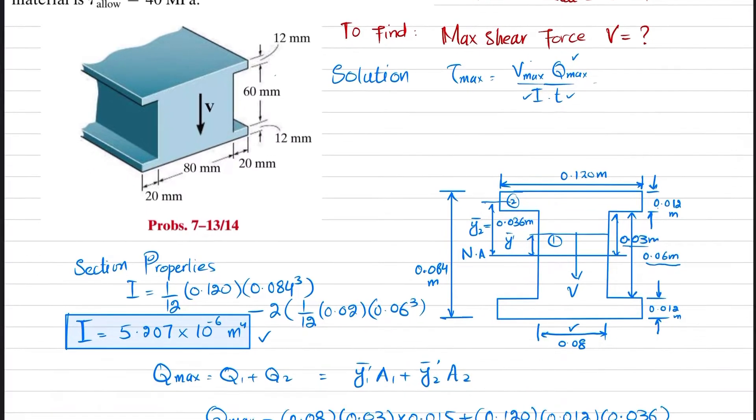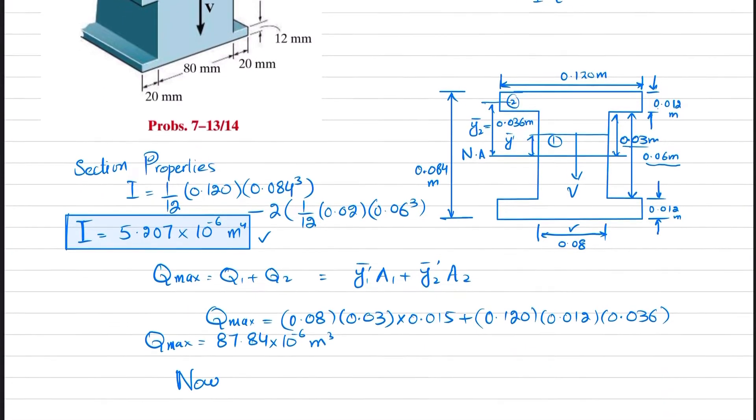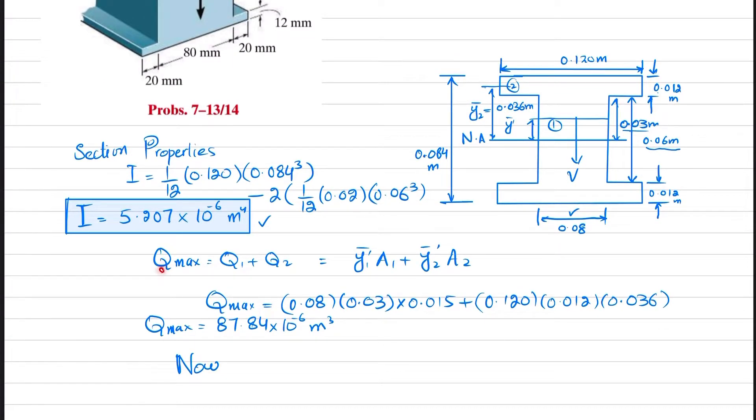Now we will find Q_max. Q_max will be for this portion above the neutral axis. I have divided this into two portions: one is this section, and the other is this section. So Q_max equals Q1 plus Q2.